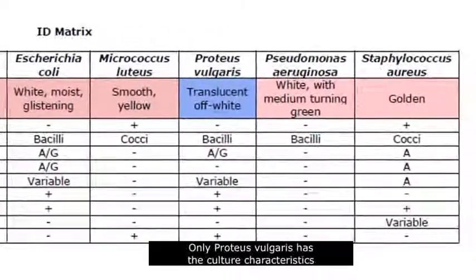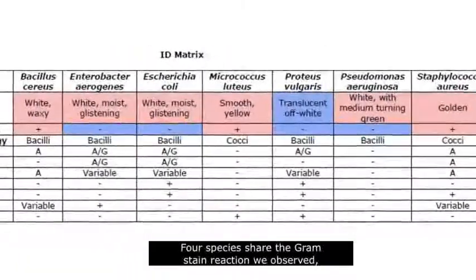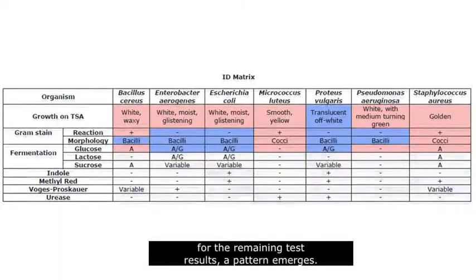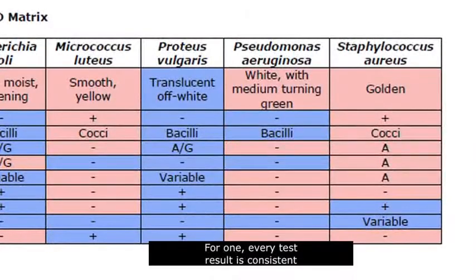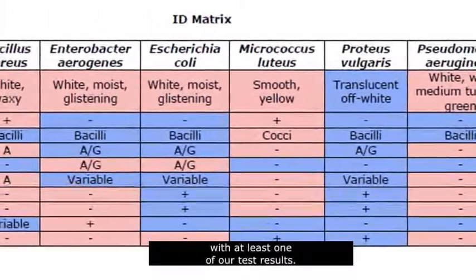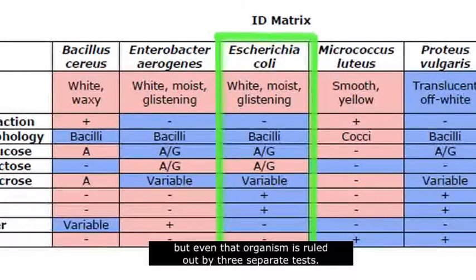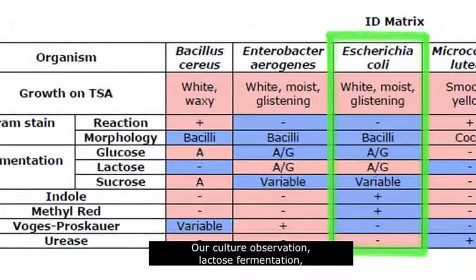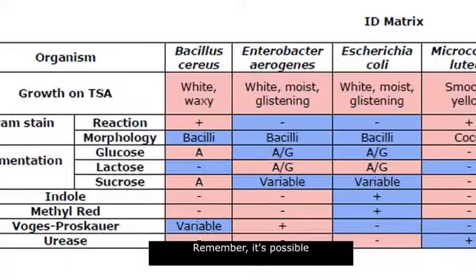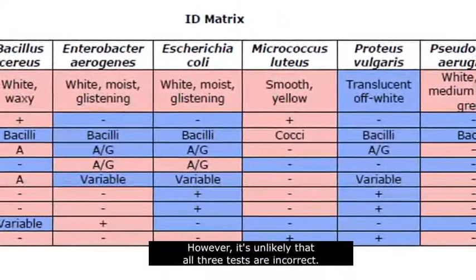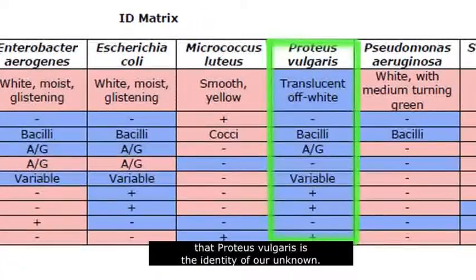Only Proteus vulgaris has the culture characteristics we observed. Four species share the gram-stain reaction we observed, and five share the same morphology. As we fill in the highlights for the remaining test results, a pattern emerges. Every test result is consistent with Proteus vulgaris being our unknown, but equally important, every other organism is inconsistent with at least one of our test results. Escherichia coli is the next closest match, but even that organism is ruled out by three separate tests: our culture observation, lactose fermentation, and urease results all suggest our unknown is not Escherichia coli. It's possible that a single test could be performed or interpreted incorrectly, but it's unlikely that all three tests are incorrect. This means we're quite confident that Proteus vulgaris is the identity of our unknown.